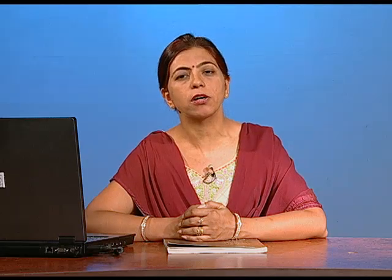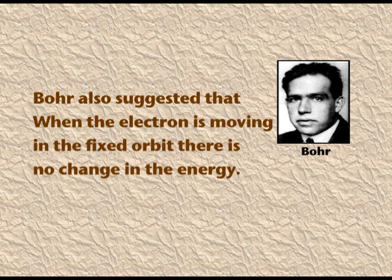This Maxwell's concept helped Bohr a lot. Bohr then gave his atomic model and proposed that the atom has a nucleus in the centre and the electrons are revolving in fixed orbits around the nucleus. These orbits have fixed radius and energy, and they are present in the form of concentric rings. He also suggested that when the electron is moving in a fixed orbit, there is no change in energy. But when an electron jumps from a lower energy level to a higher energy level, it absorbs energy; or when an electron moves back from the higher energy level to the lower energy level, the energy is radiated or emitted.